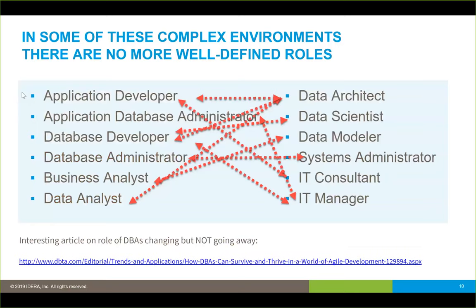It used to be that when you were dealing with databases or part of these teams, there were about nine personas. You had an application developer, an application database administrator, a database developer, a database administrator, a business analyst, a data analyst, a data architect, and a data scientist who would do your algorithms. Those people pulled the data out and made sense of what you were looking at. And then you had a data modeler who sometimes was in its own silo or would be on the DBA team, creating databases and modeling them from scratch or reverse engineering them.